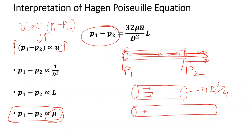So this is the meaning of the proportionality of these terms with respect to each other in the Hagen-Poiseuille equation. Thank you.